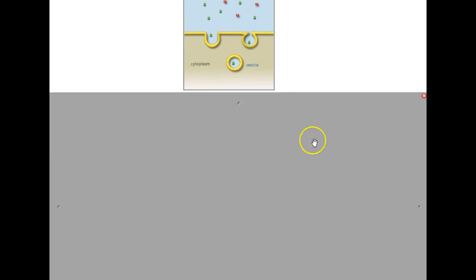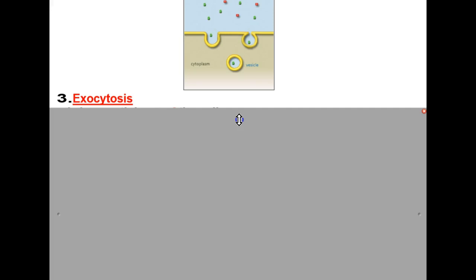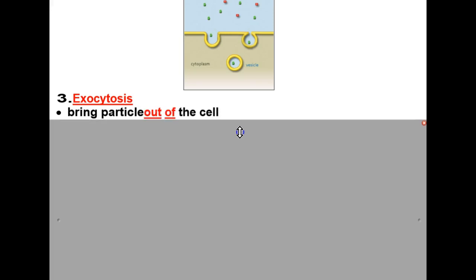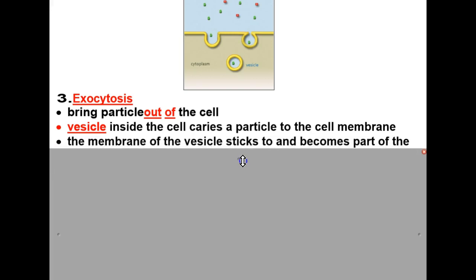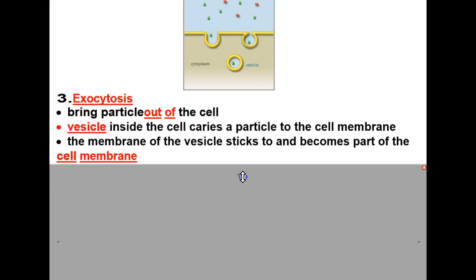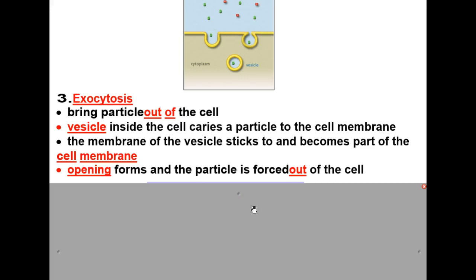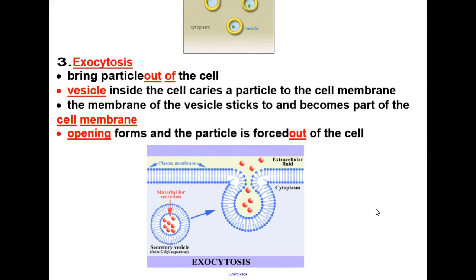The other type of active transport is the opposite — exocytosis. 'Exo' means out, so it brings the particle out of the cell. A vesicle inside the cell carries a particle to the cell membrane; the membrane of the vesicle sticks to and becomes part of the cell membrane, an opening forms, and the particle is forced out. In the diagram, the vesicle joins the cell membrane, becomes part of it, opens, and expels the secreted particles to the outside of the cell.